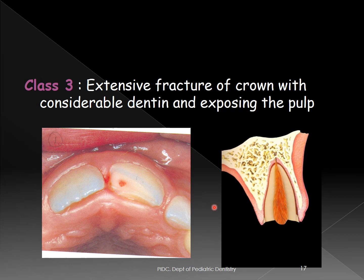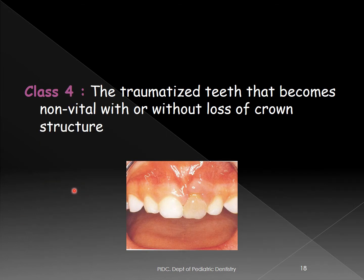Class III is more severe still: fracture of enamel with considerable dentine exposure and exposure of the pulp chamber. Clinically, the pulp is now exposed. The pulp may not be bleeding because it is not yet inflamed — bleeding would occur if it were inflamed.